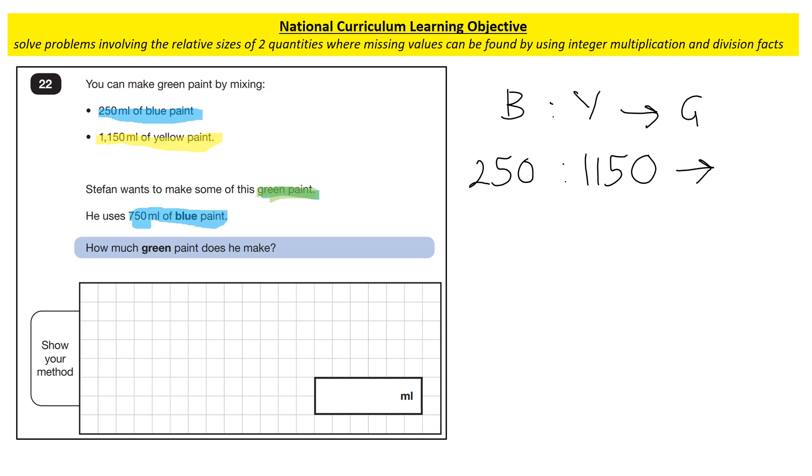Now the question doesn't ask you to do this, but what I would also do is I would add up my two parts. 250 and 1,150 makes 1,400. And in this question you don't actually need to do that, but I just do this as a habit. I can see that if I use 250 milliliters of blue and 1,150 milliliters of yellow, I would have 1,400 milliliters of green or 1.4 liters of green. Now that's our clues, that's the information we've been given. If we go to the second part of the question, which is this.